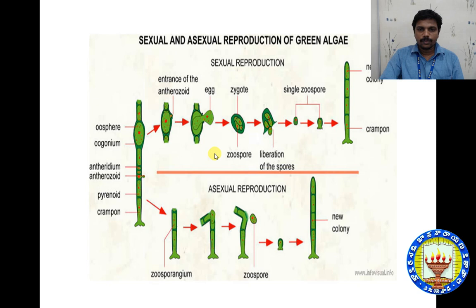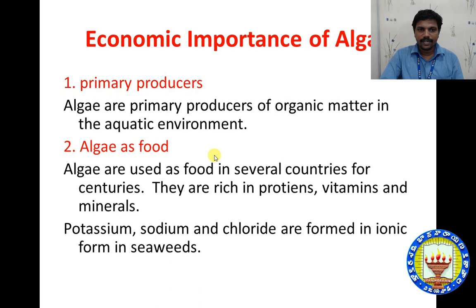In Ectocarpus, there are two types of sporangia present: unilocular sporangia and plurilocular sporangia, also called multilocular sporangia. Finally, the economic importance of algae — algae members show cosmopolitan distribution and there are 30,000 species represented in the world.